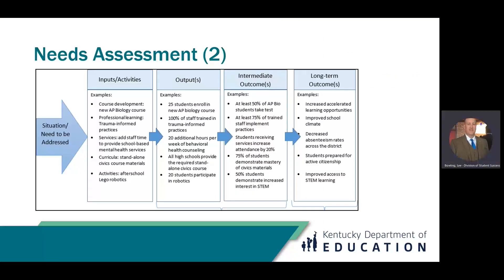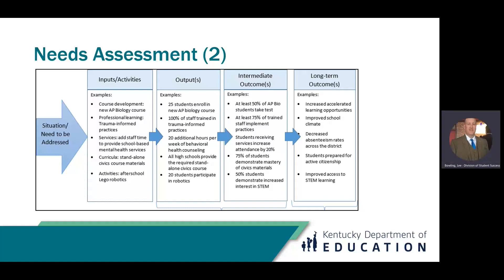Once you have gone through identifying the needs and determining challenges and available resources, you will look at what inputs and activities will address the need and may be supported with Title IV Part A funds. You will want to think about the goal or outcome of implementing the activity — what are the outputs, the intermediate outcomes, and the long-term outcomes? The district will want to look at their plan for assessing the program for effectiveness with the outcomes in mind.